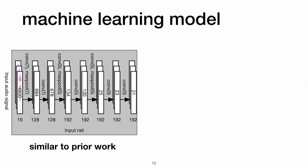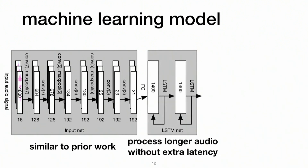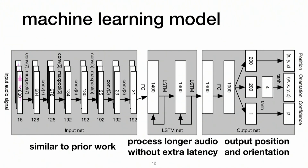Our machine learning model has a few layers of convolutional neural network to process the raw signal, similar to prior work. With CNN alone you get poor results because the input is limited to a certain length. To extend it to arbitrary length, we append an LSTM after that. The LSTM processes the current input along with all prior input, making the signal more stable. Our model also outputs both position and orientation, and additionally we add a confidence output — because during different parts of speech our accuracy varies. After a command is spoken we do a weighted average using confidence scores to get the most accurate result.